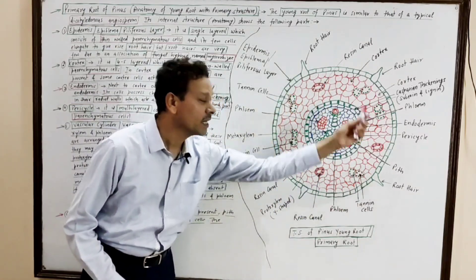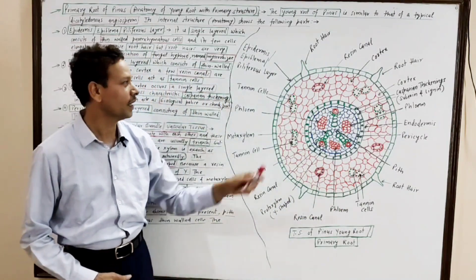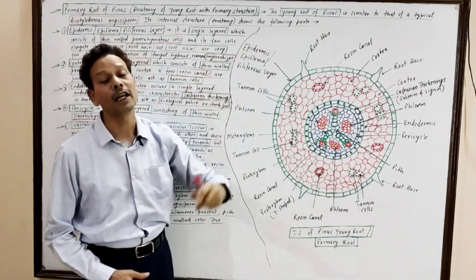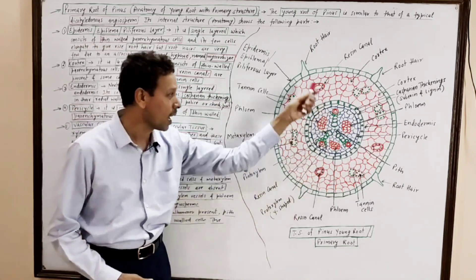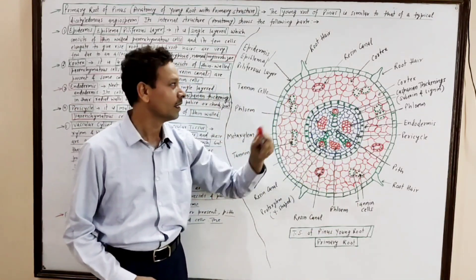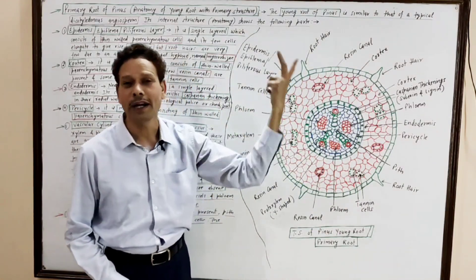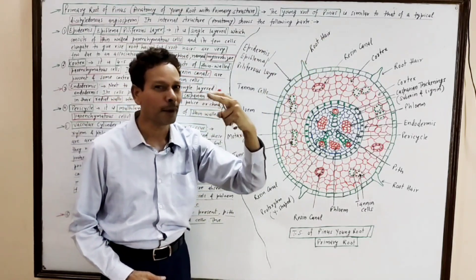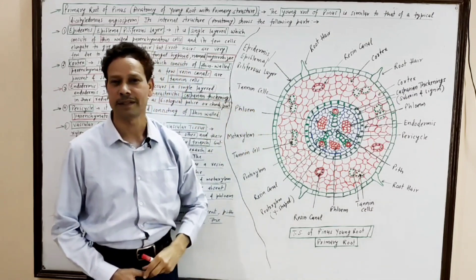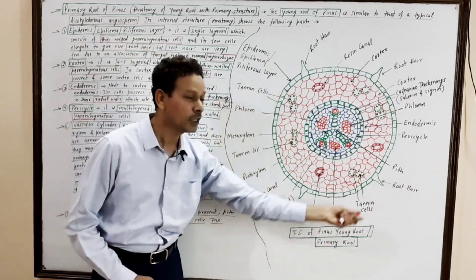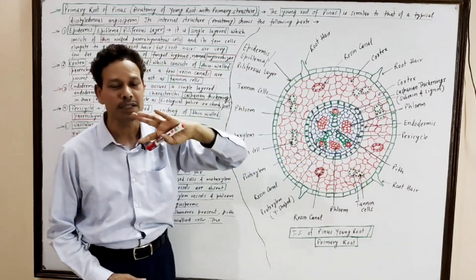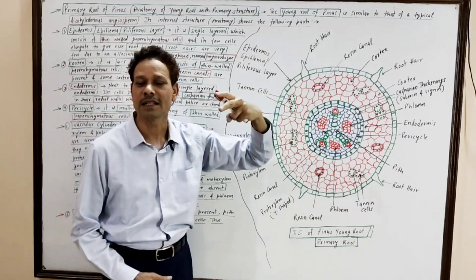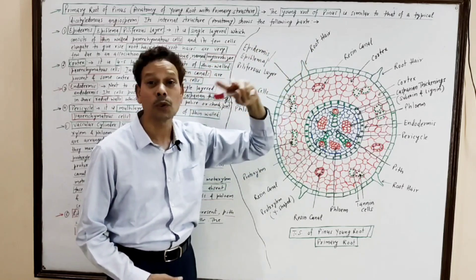The outermost single layer is the epidermis, also called epiblema or pileiferous layer. Some cells of this outer layer become elongated and produce root hair. For competitive exam students, note that in Pinus this outer layer — the epidermis — is pileiferous or epiblema, and its few cells become elongated and produce root hair.